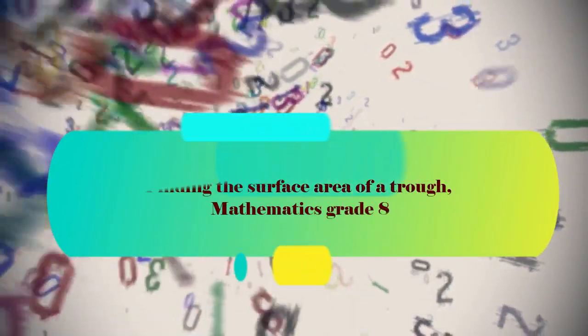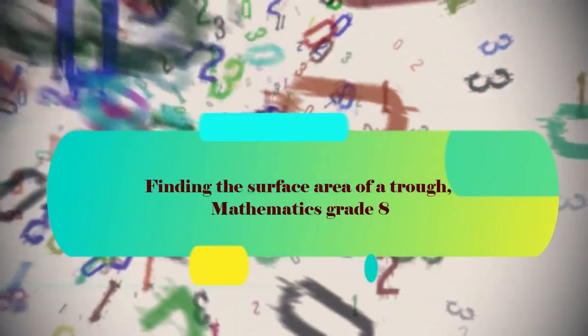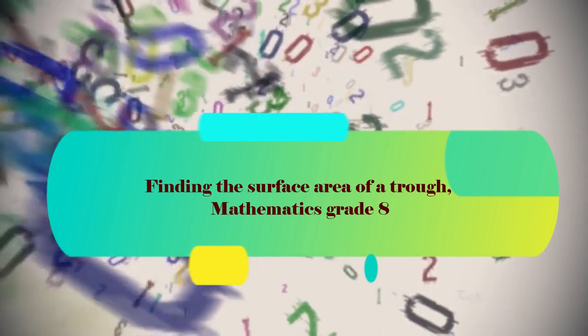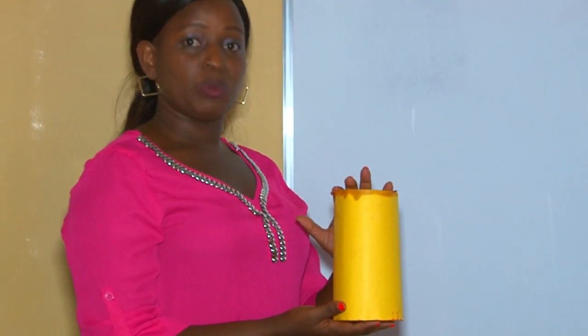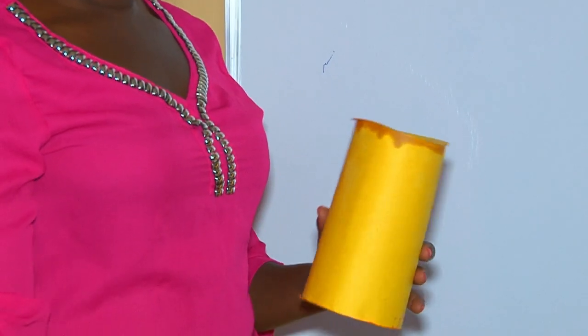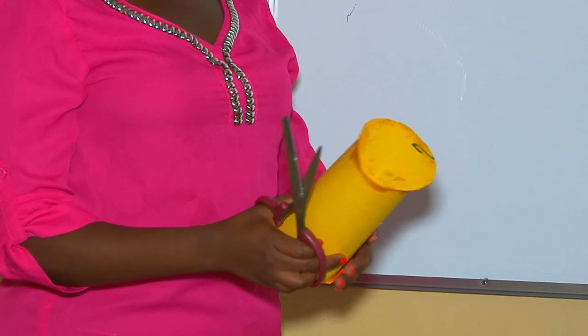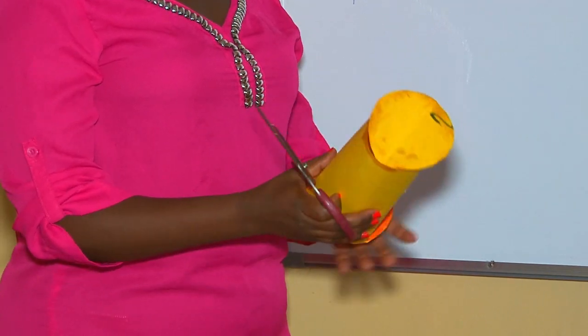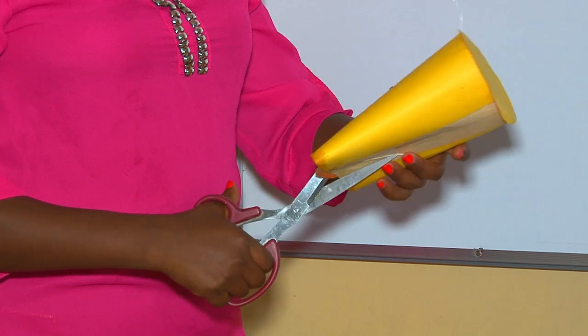Welcome to our lesson. Today's lesson is the surface area of a trough. We can find the surface area of a trough in Grade 8 mathematics. I want us to understand exactly what a trough is before working it out. For instance, here I'm holding a cylinder. We can change this cylinder to become a trough by cutting it into two equal parts — into a half. Let's cut it together.